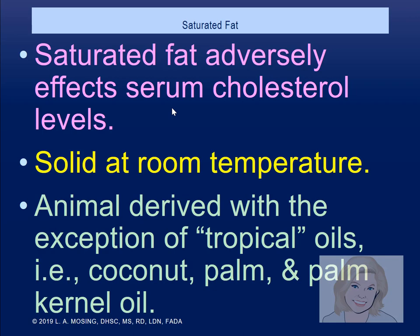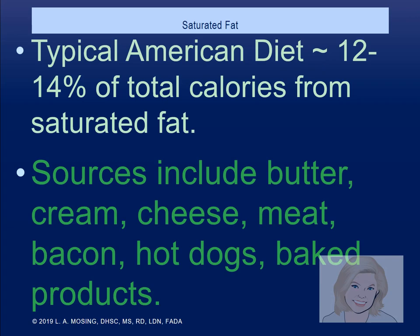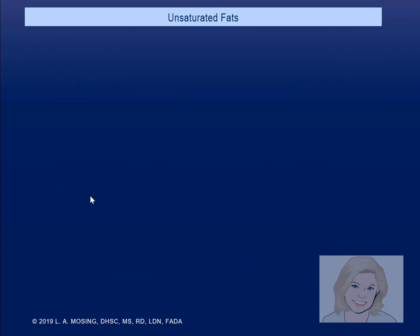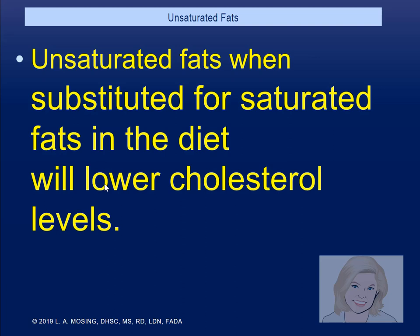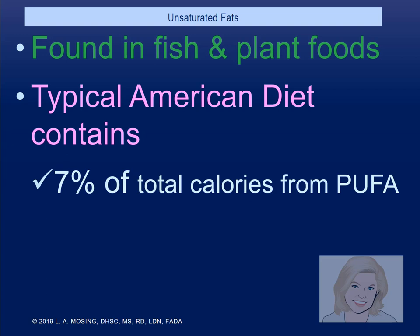The typical American diet has about 12 to 14% of total calories from saturated fat — the Mediterranean diet is lower, and their risk factors reflect that. Foods like cheese, butter, hot dogs, baked products — those are higher fat foods. If you substitute olive oil for butter, you're lowering the cholesterol level in your diet. Unsaturated fats are found in fish and flax — our American diet is a little low on that.